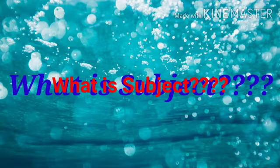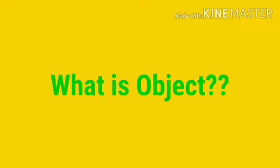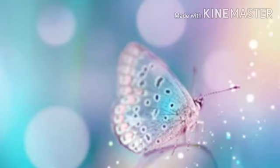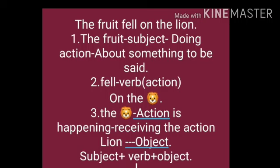What is subject? Subject is one who is doing the action or about which something is said. And what is object? The object of a sentence is the person or thing that receives the action. Let's see through this example: 'The fruit fell on the lion.' The fruit is the subject here, because we are talking about the fruit. Fell is the verb — all doing or action words are known as verbs. The lion is the object here, because the lion is receiving the action.